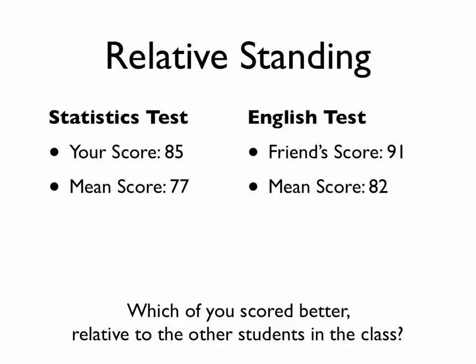Well, that doesn't quite answer the question either, because we need to know about the spread of all the scores — in general, how consistent were scores on the statistics test and the English test. The standard deviation allows us to answer that question. For the statistics scores, the standard deviation was 3.5, which means, on average, that's how much scores deviated from the mean of 77.